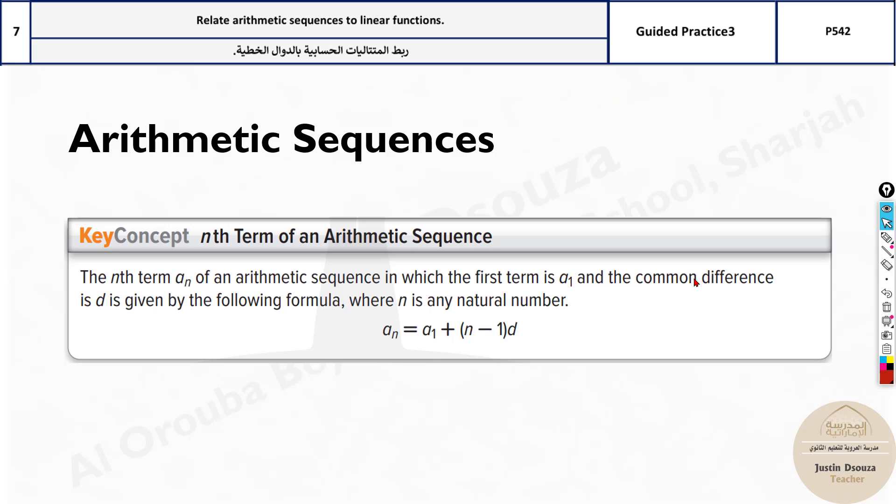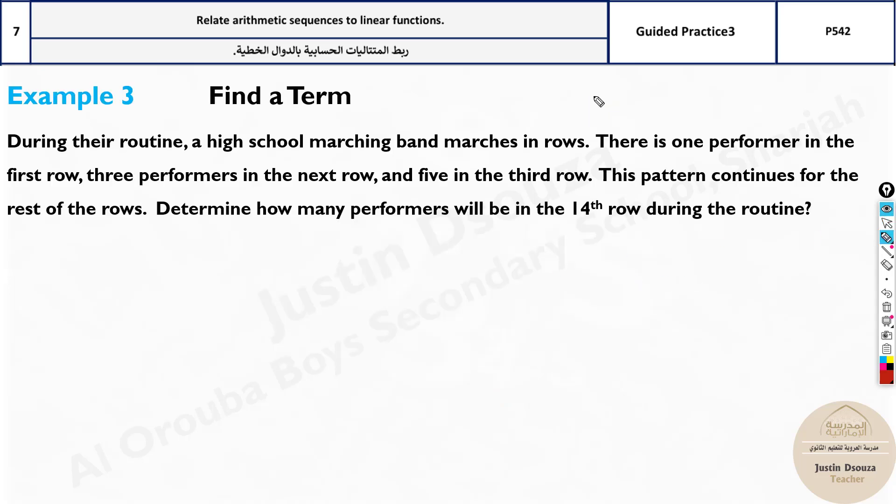Now we will solve some problems. Here, during their routine, a high school marching band marches in rows. There is one performer in the first row. They have told this is the first row, a1.